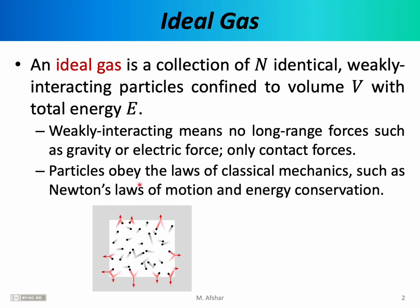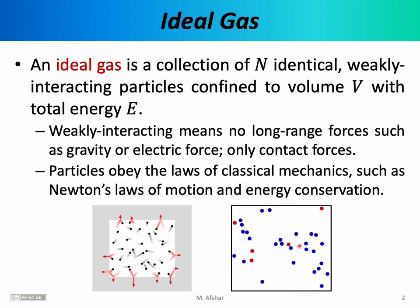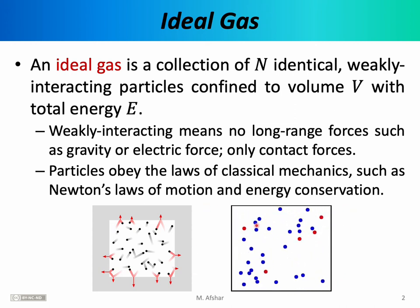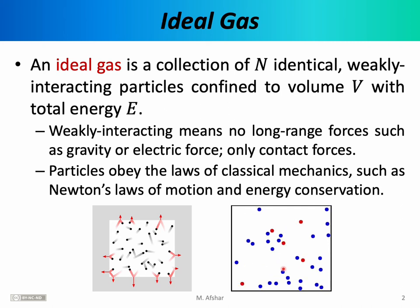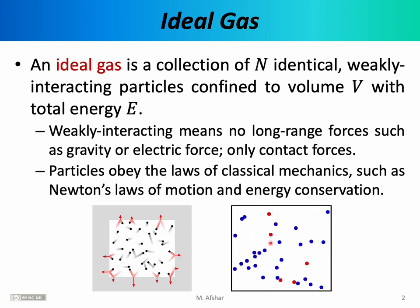Otherwise, we assume that these particles obey all the laws of classical mechanics. So all the physics that you learned in your mechanics course, such as Newton's laws of motion, conservation of energy, conservation of momentum — they all still apply to these individual particles. If you want to have a picture in mind of what an ideal gas looks like, you can essentially imagine a large collection of ping pong balls zipping around inside a box. These ping pong balls may collide with the walls of the container, and occasionally they may collide with each other. As they do, there is conservation of momentum, and we can apply all the physics from our mechanics course to individual collisions between these particles.